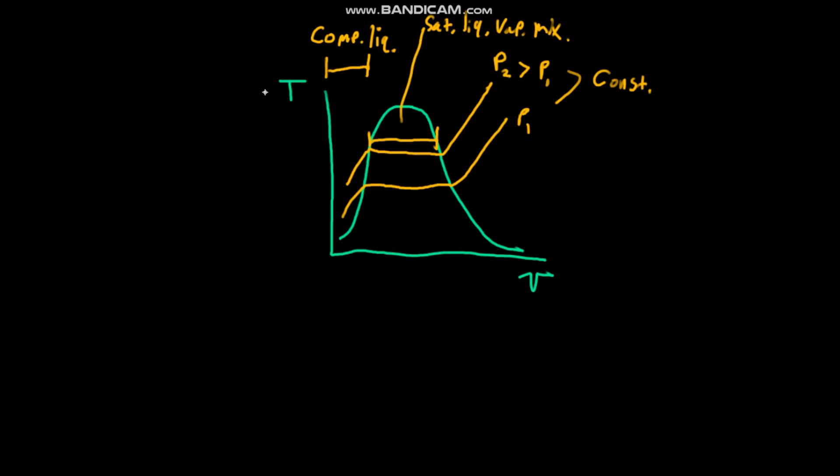And that mixture will have what's called a quality, often denoted by an x. So, you'll have a quality and that is the percentage of that mixture that is steam. So, you'll have no quality at first, and then you'll have some quality between zero and one, because it's a percentage, under this dome.